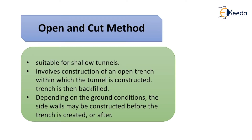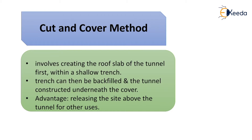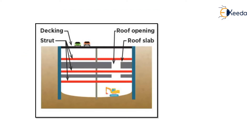The cut and cover method is suitable for shallow tunnels. It involves the construction of an open trench within which the tunnel is constructed, and then the trench is backfilled. Depending on the ground condition, the side walls may be constructed before the trench is created or after. It also involves creating the roof slab of the tunnel first and then the shallow trench, which is then backfilled with the tunnel constructed underneath the cover. The advantage of the cut and cover method is that it frees the surface above the tunnel for other uses.